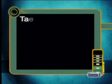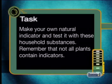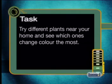Based on the color of the tea, we can group these substances into different categories. The light yellow color of the tea classifies an acid, and the darker brown color classifies a base. Let's take a look at today's task: make your own natural indicator and test it with these household substances. Not all plants contain indicators — try different plants near your home and see which ones change color the most.